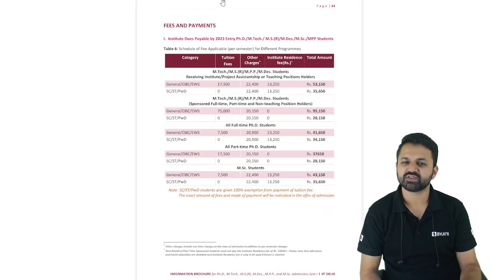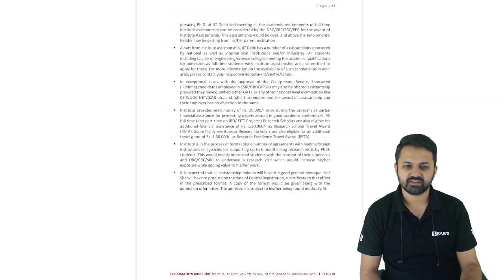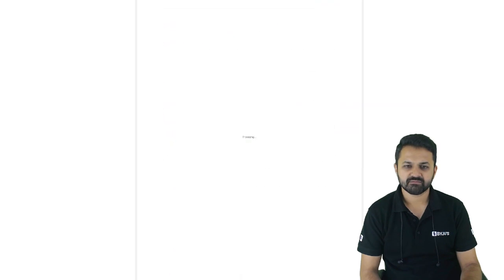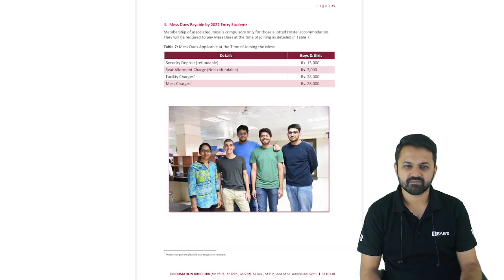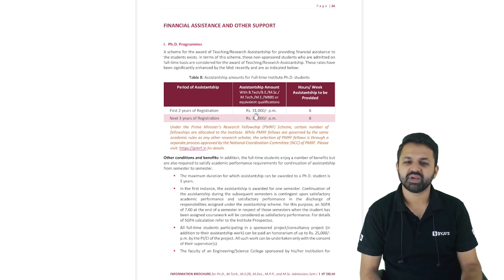Coming to fees and financial assistance at IIT Delhi: for the PhD program, the research assistantship amount is ₹31,000 per month for the first two years of registration and ₹35,000 per month after two years.